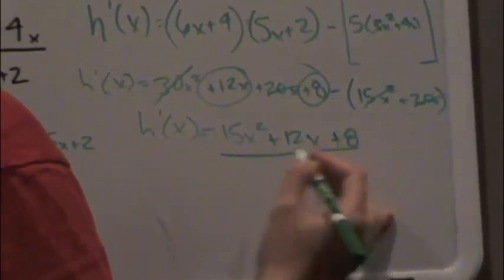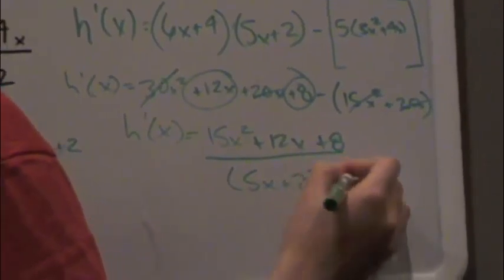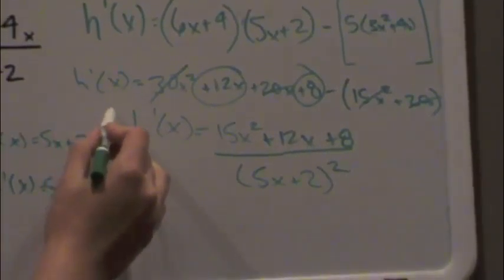And we put all of that over g of x squared, 5x plus 2 squared. So that is your derivative.